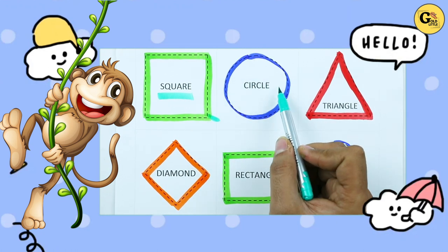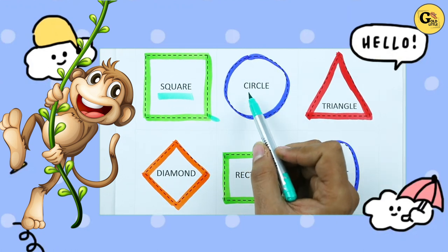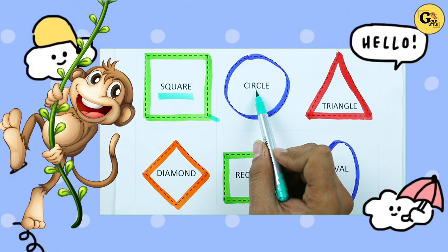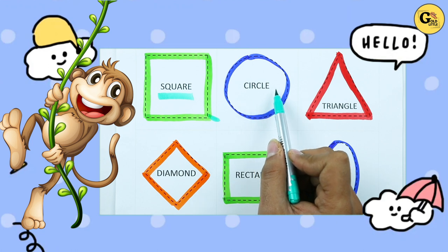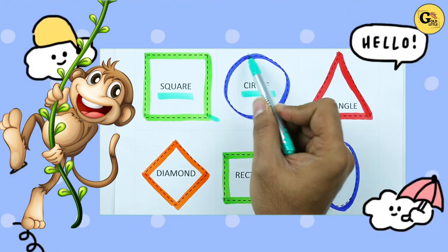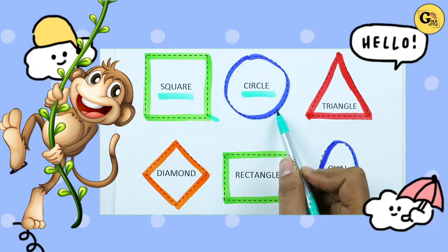Which shape is this? Circle. C-I-R-C-L-E. It's a circle with blue color.